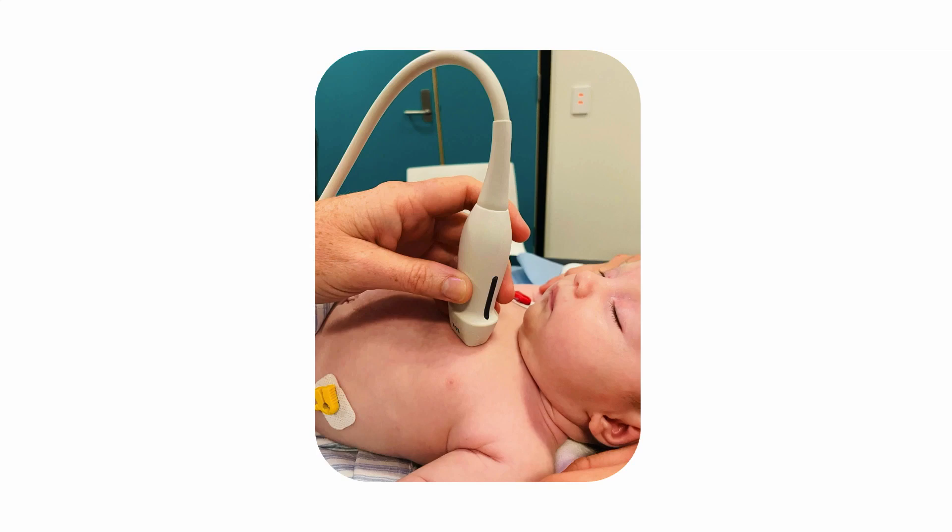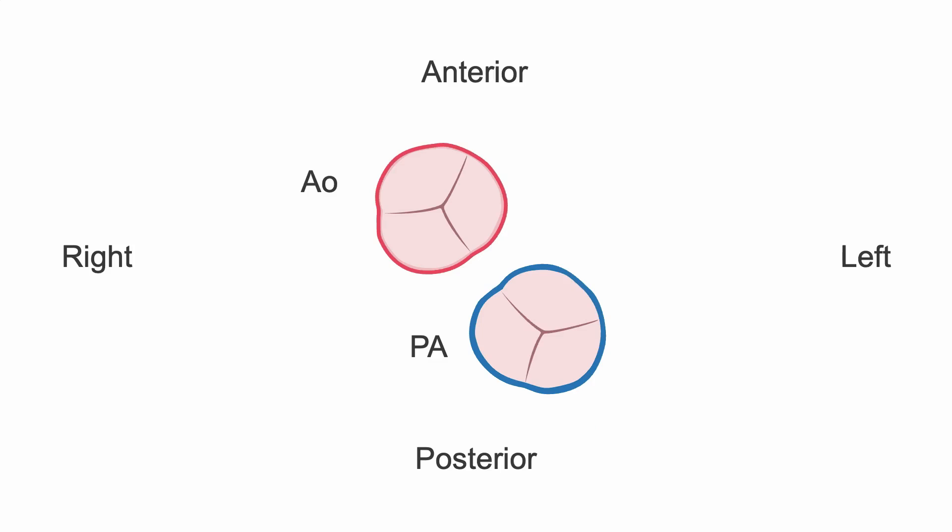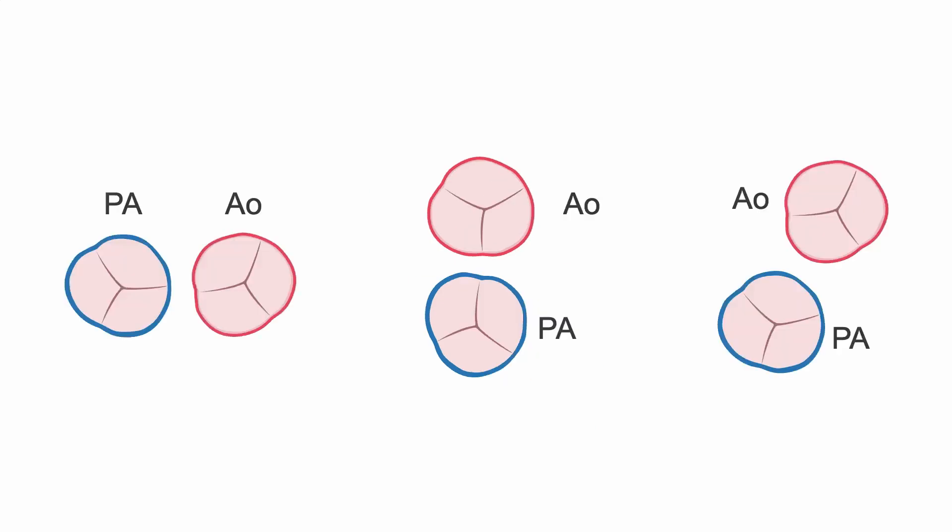Next, in the parasternal short axis view, take note of the position of the aorta in relation to the pulmonary artery. In TGA, the aorta is most commonly positioned anterior and rightward to the pulmonary artery, although any position of the great arteries may be seen.